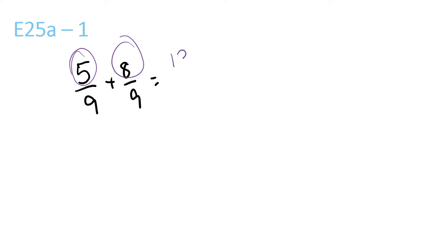5 plus 8 is 13 over 9 because the bottom one stays the same. 9 goes into 13 once with a remainder of 4 over 9. 1 and 4 over 9, leave it up here.